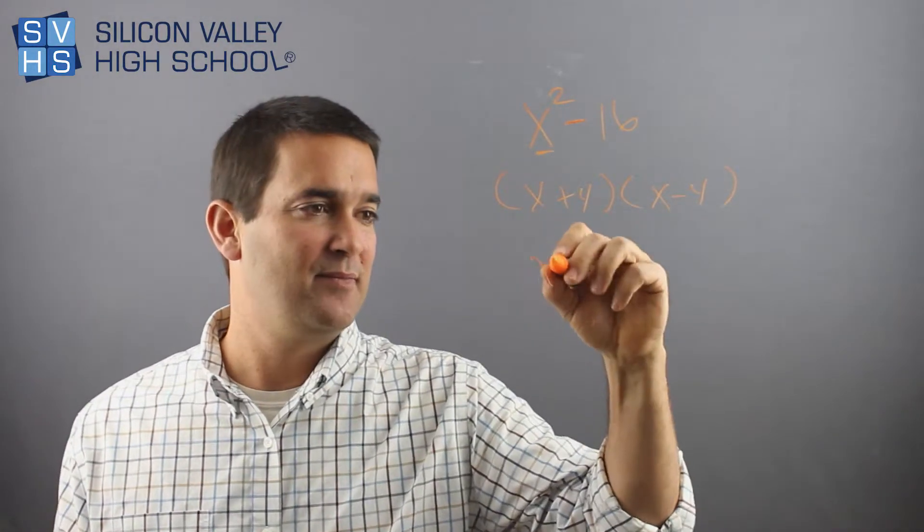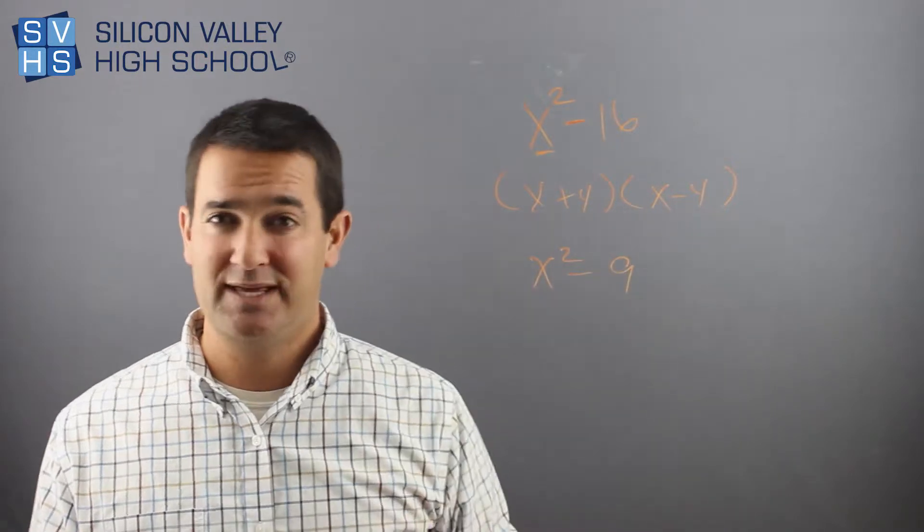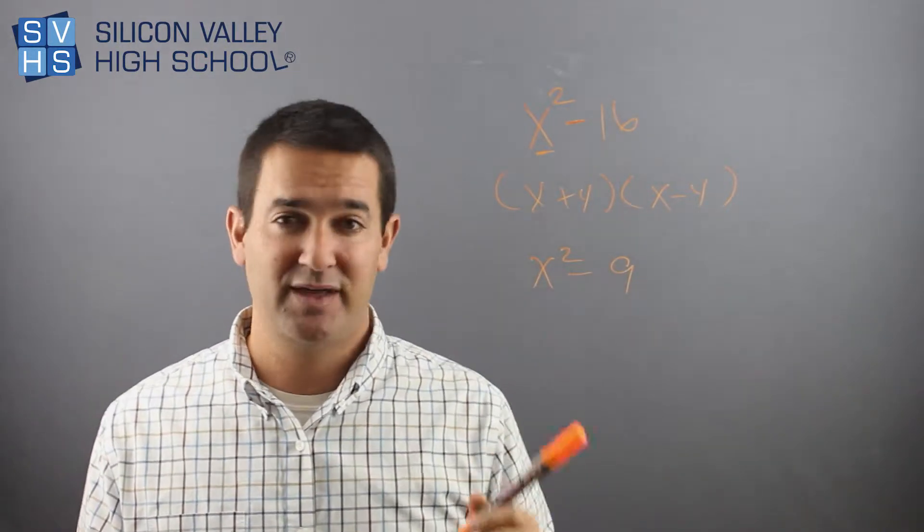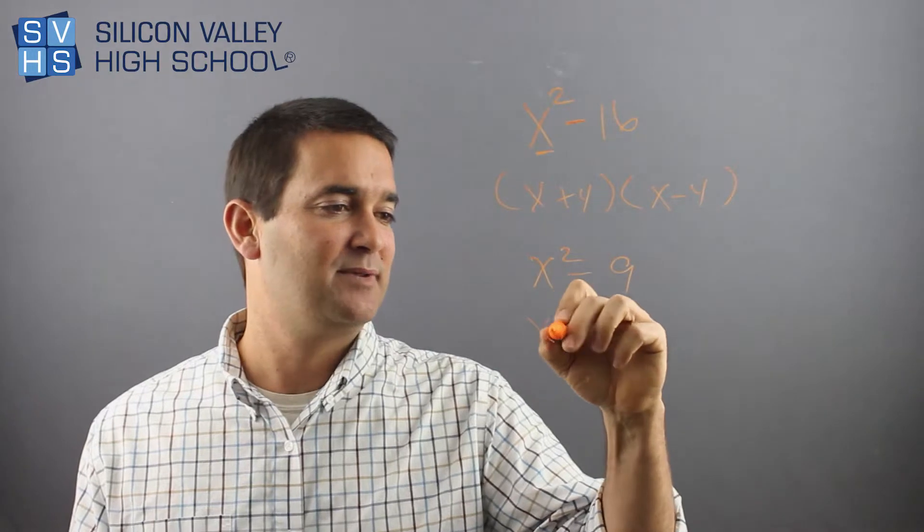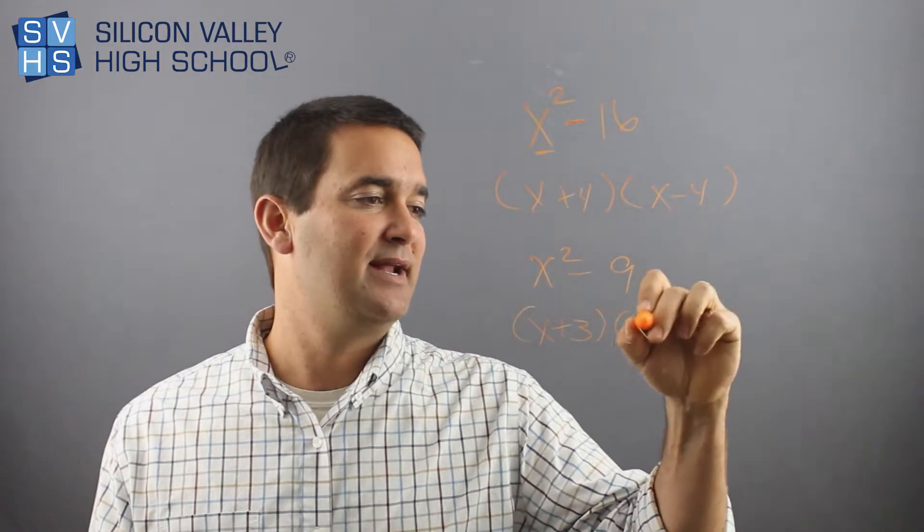So when you spot them like this, they become really easy. It's two things that are squared and they're subtracting one another. x plus three, x minus three.